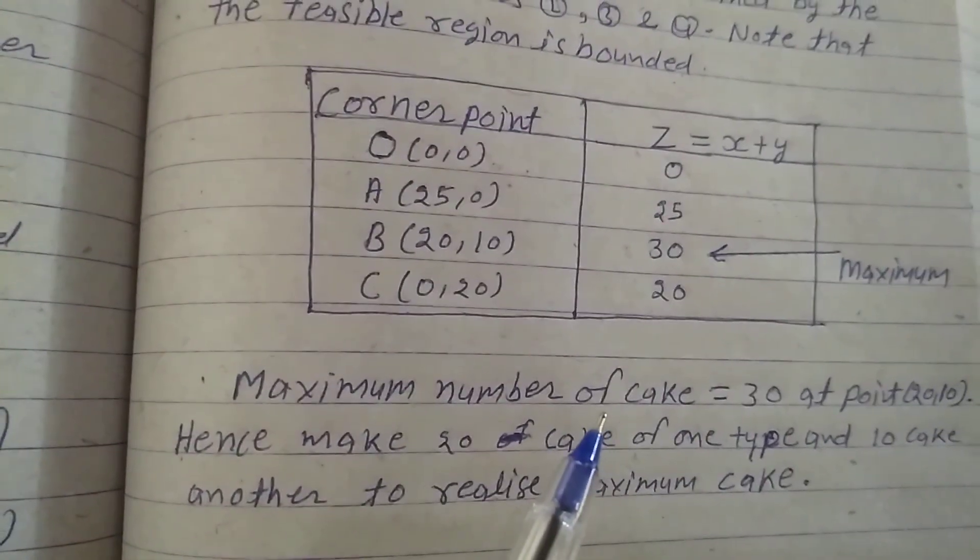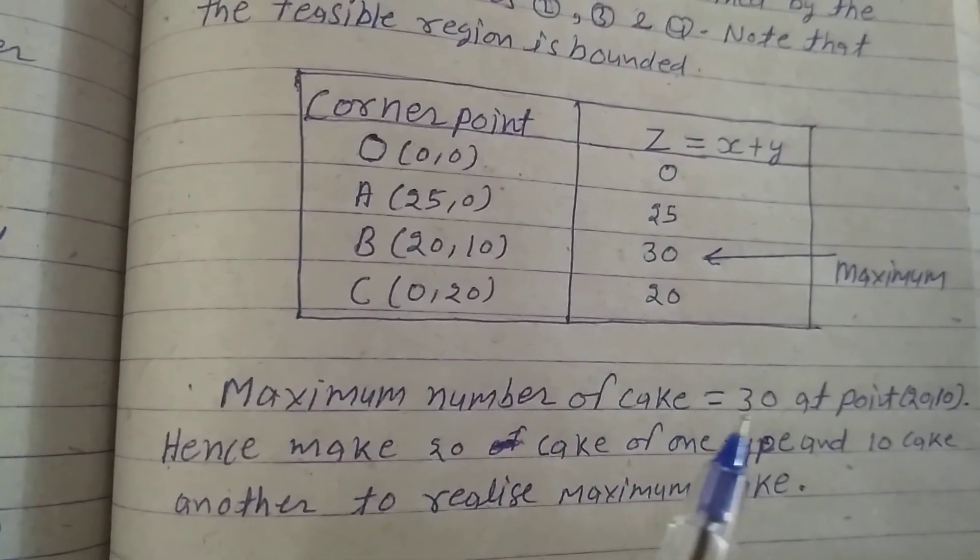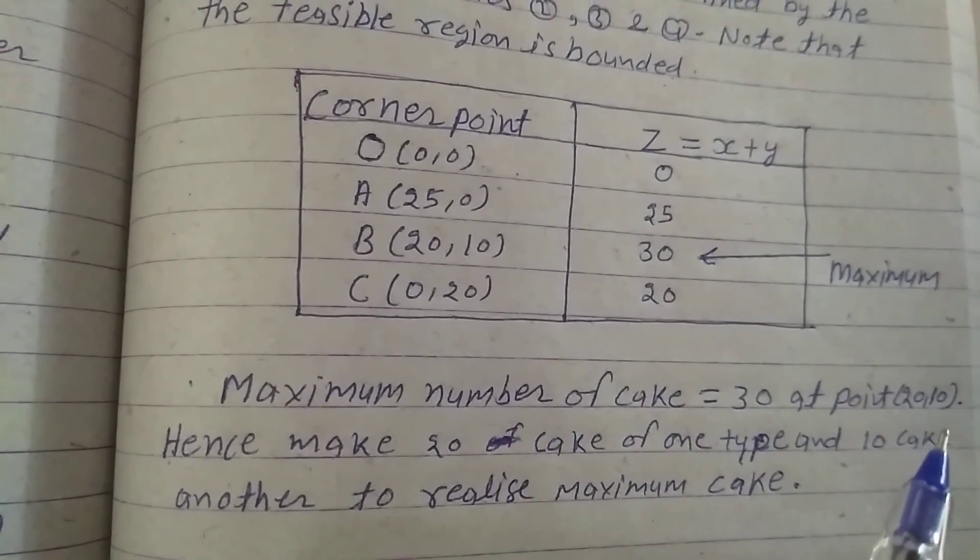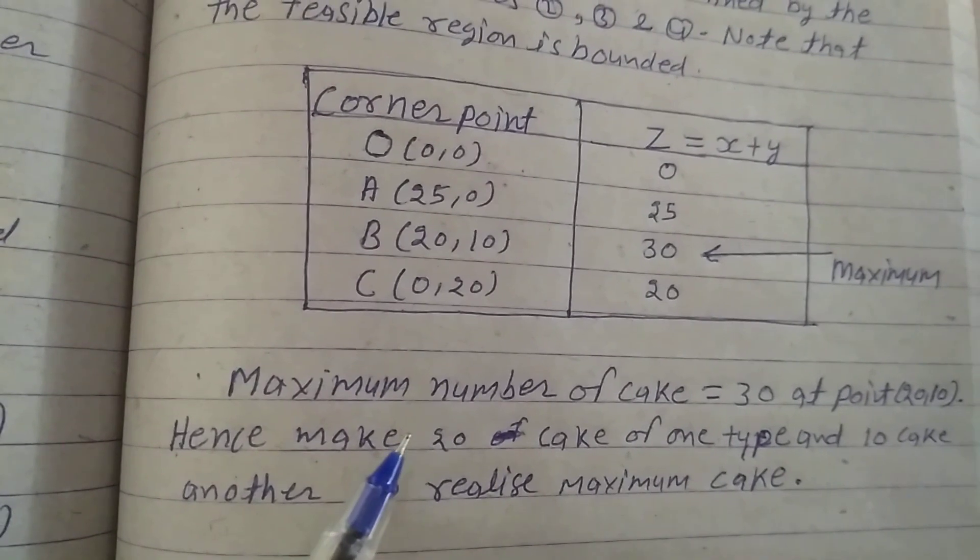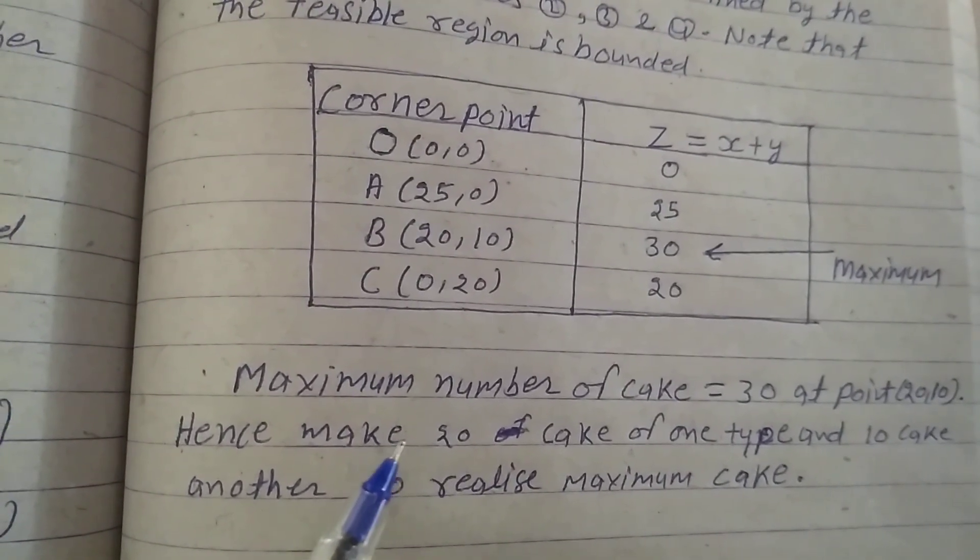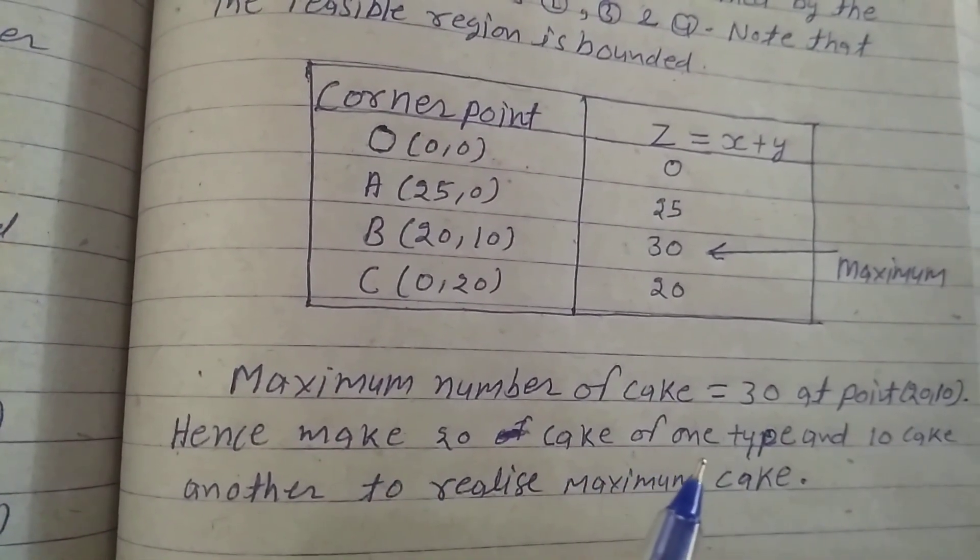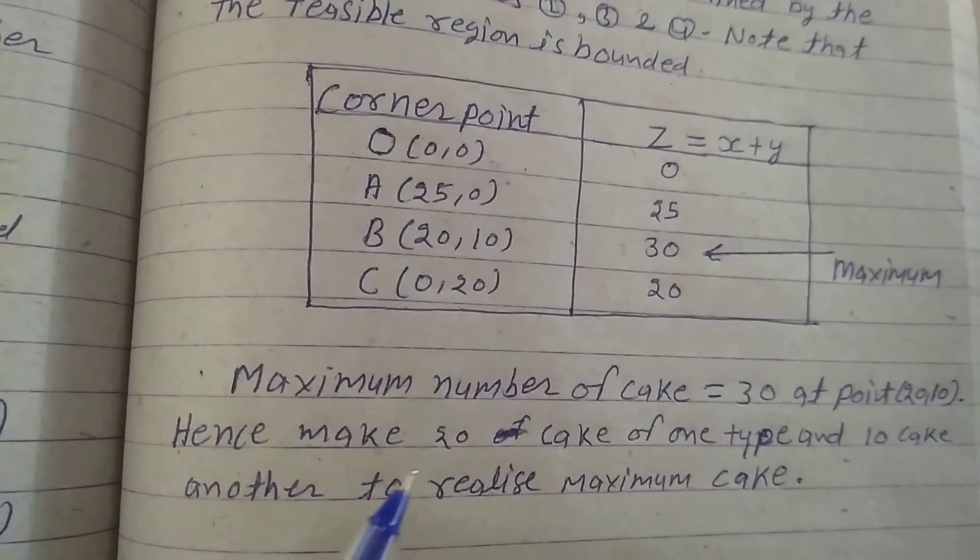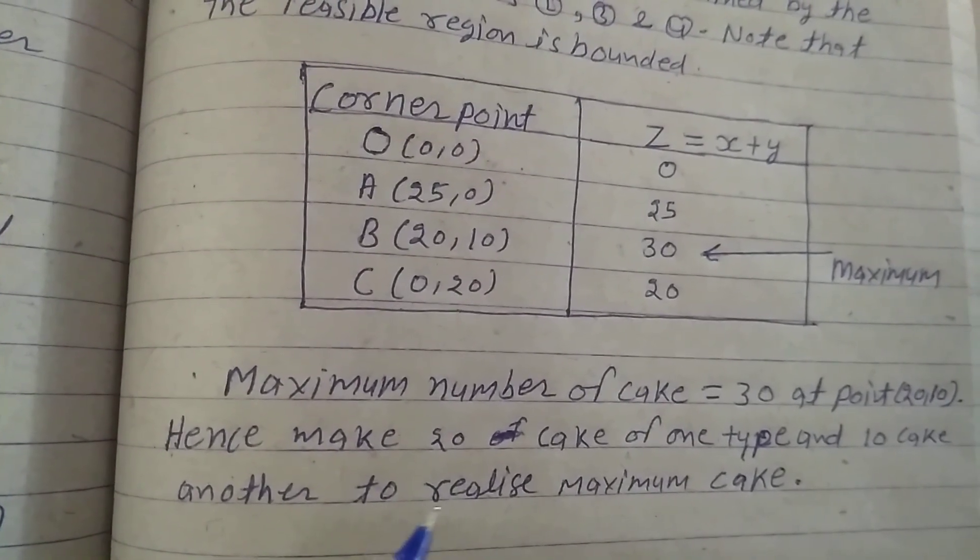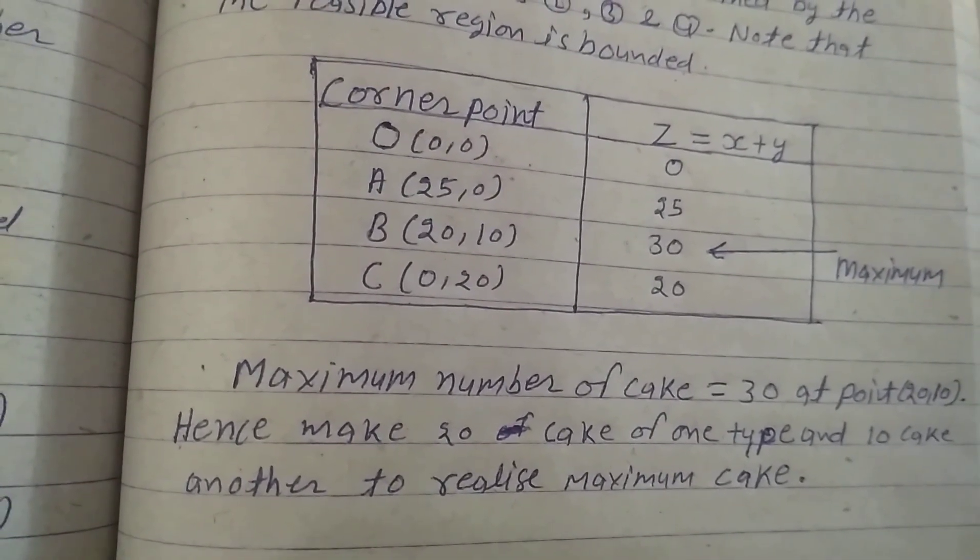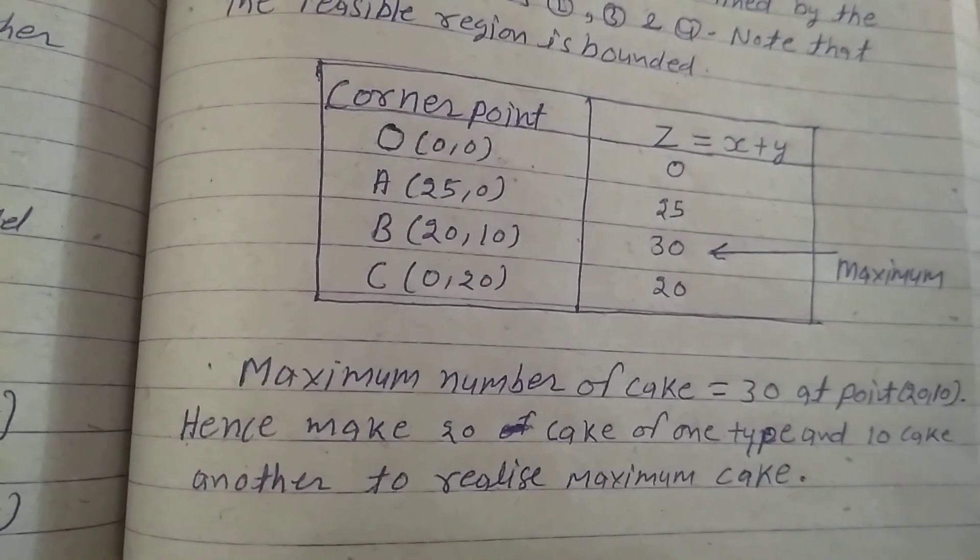The maximum number of cakes is equal to 30 at point (20, 10). Hence, make 20 cakes of one type and 10 cakes of another type to realize the maximum cakes. This is the answer.